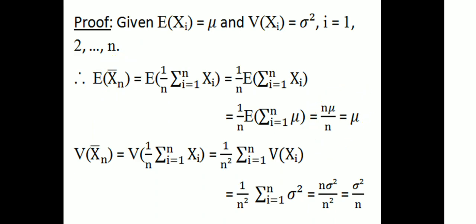Then, variance of Xn bar equals variance of (1/N) times summation of Xi. Using the property that variance of a constant times X is the constant squared times variance of X, we get (1/N²) times the summation of variance of Xi. Since variance of Xi = sigma squared, we get (1/N²) times N times sigma squared, which gives sigma squared divided by N.